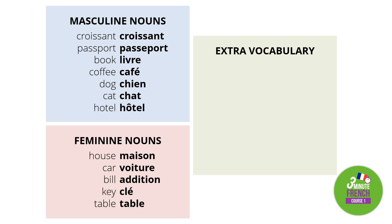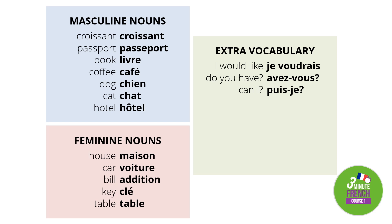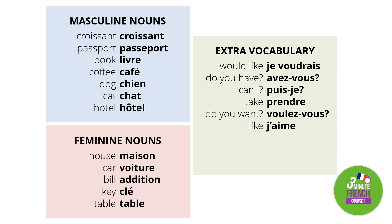And some extra vocabulary: 'I would like' in French is 'je voudrais'. 'Do you have?' is 'avez-vous?' 'Can I?' is 'puis-je'. 'Take' is 'prendre'. 'Do you want?' is 'voulez-vous?' 'I like' is 'j'aime'. 'Do you like?' is 'aimez-vous?' 'Is' is 'est', and 'here' is 'ici'.